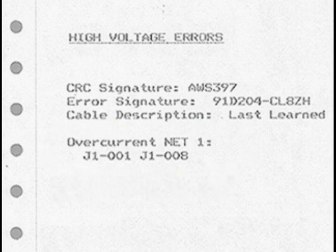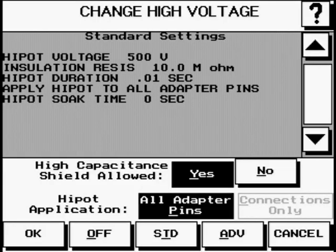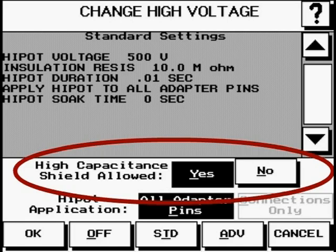If only one overcurrent failure is listed on the error report, it is due to a highly capacitive wire such as a shield. Since at least two wires must fail for a cable to be truly bad, you can set the option high capacitance shield is allowed to overcome this problem.